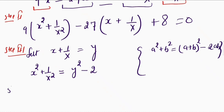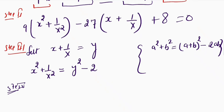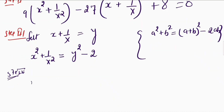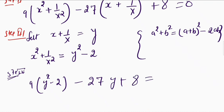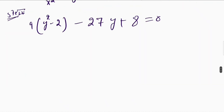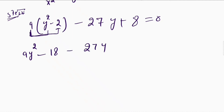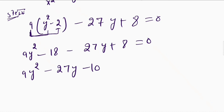In the fourth step I will put all these values into the equation from step 2. I can write this as 9 times (y square minus 2) minus 27y plus 8 is equal to 0. Opening the bracket by multiplying 9 inside, this becomes 9y square minus 18 minus 27y plus 8 is equal to 0. So this simplifies to 9y square minus 27y minus 10 is equal to 0. Now this is my quadratic equation.